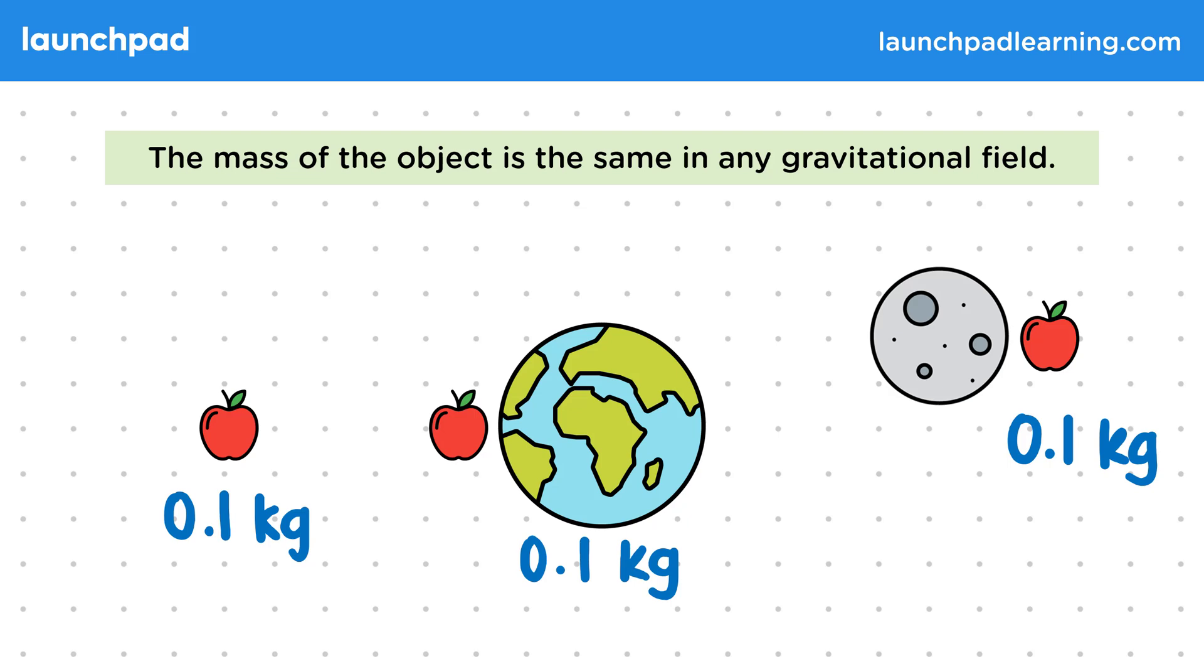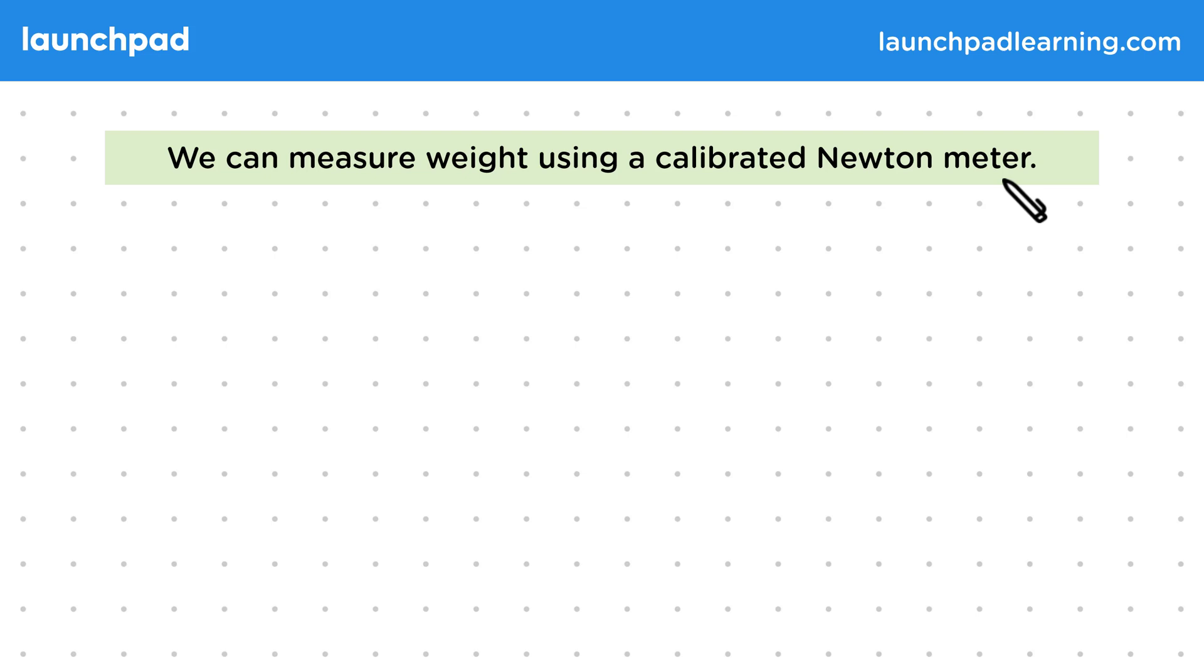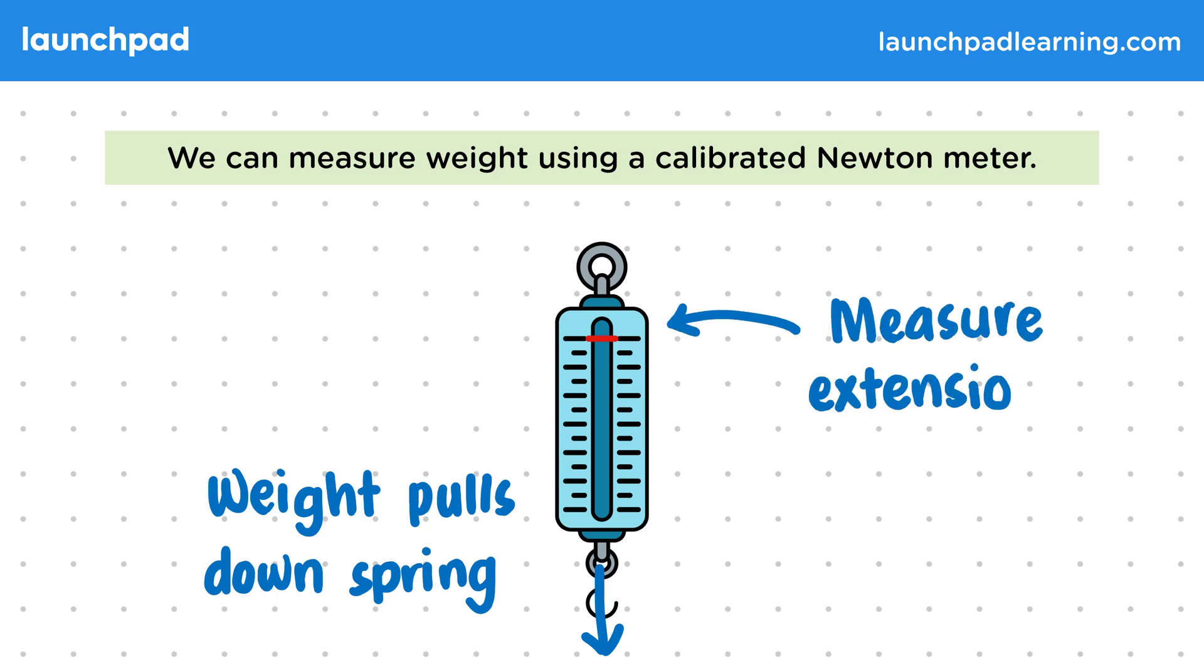So how should we measure weight? We can measure weight using a calibrated Newton meter. The weight can be attached to a Newton meter by fixing the top and then hanging it from a hook at the bottom. The weight pulls down the spring and the extension is proportional to the force exerted. So by measuring the extension of the spring, we can measure the weight. And we can calibrate the Newton meter by attaching known masses and weights and then marking the extension of the spring to create a calibrated scale.